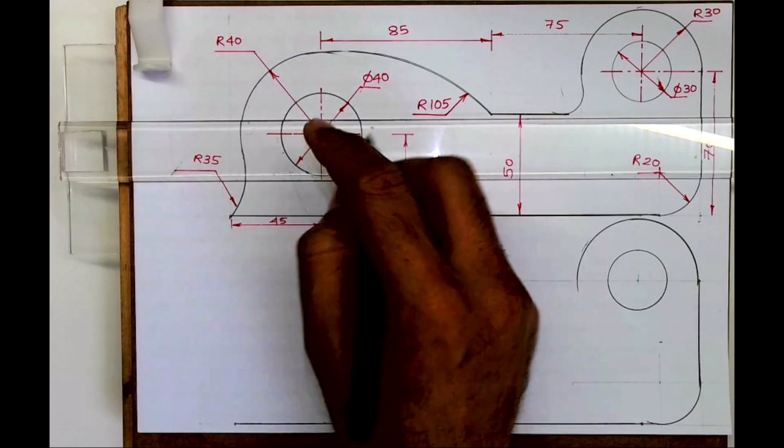Wherever it will meet, from that point we'll draw radius 20. Then you draw vertical line and from here you draw horizontal line. Now we need to mark the center which is 40 up and 45 from this point. This is point A.